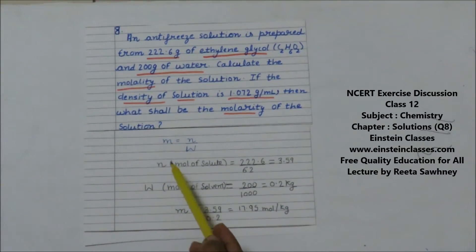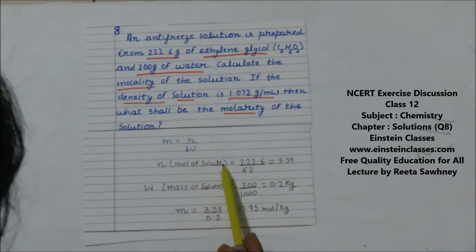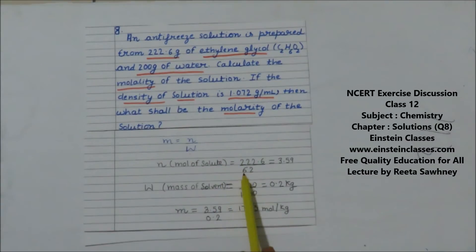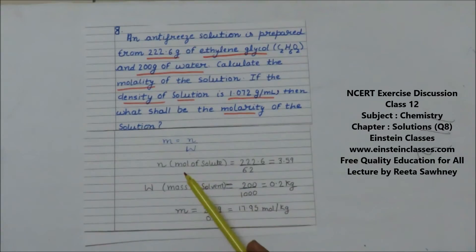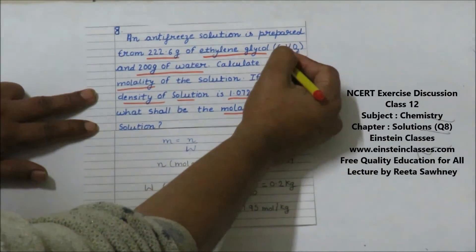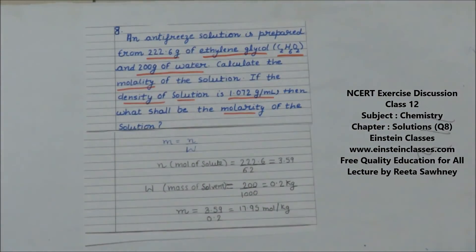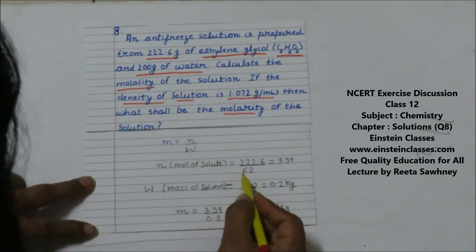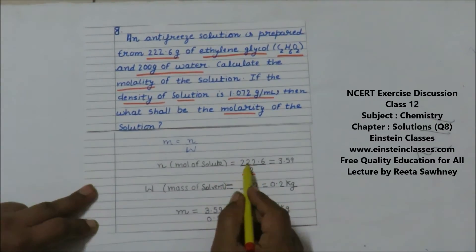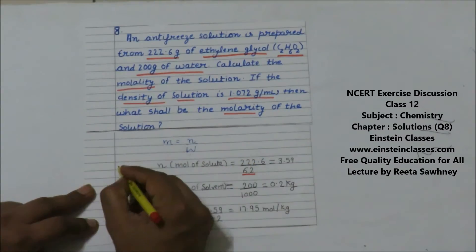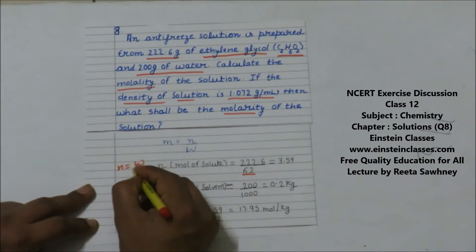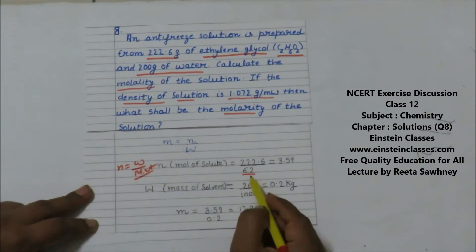To calculate the molality of the solution, molality is moles of solute divided by the mass of solvent in kilograms. Moles of solute can be calculated as given mass divided by molar mass. The formula of ethylene glycol is already given, and from the molecular formula the molar mass of ethylene glycol comes out to be 62.